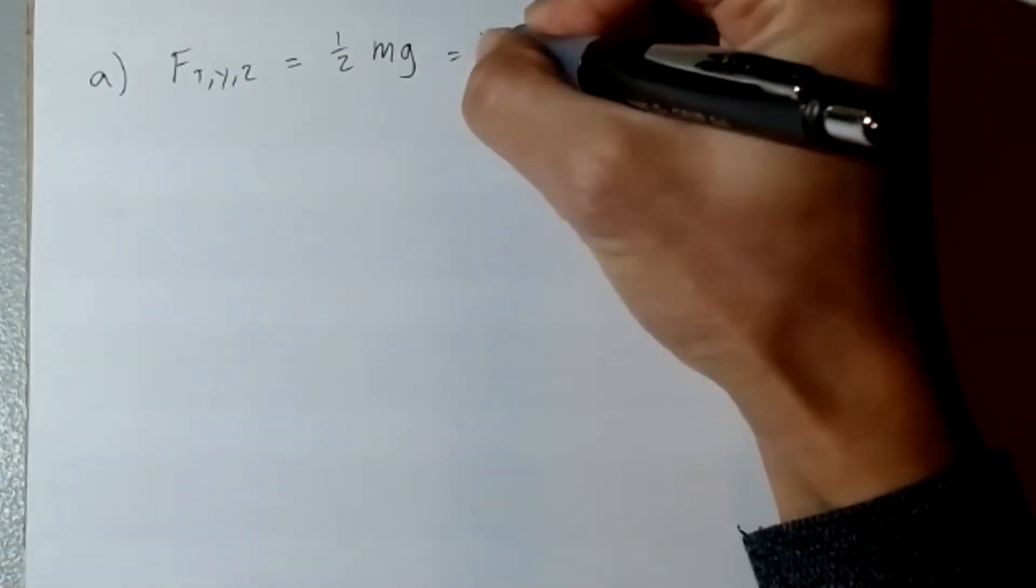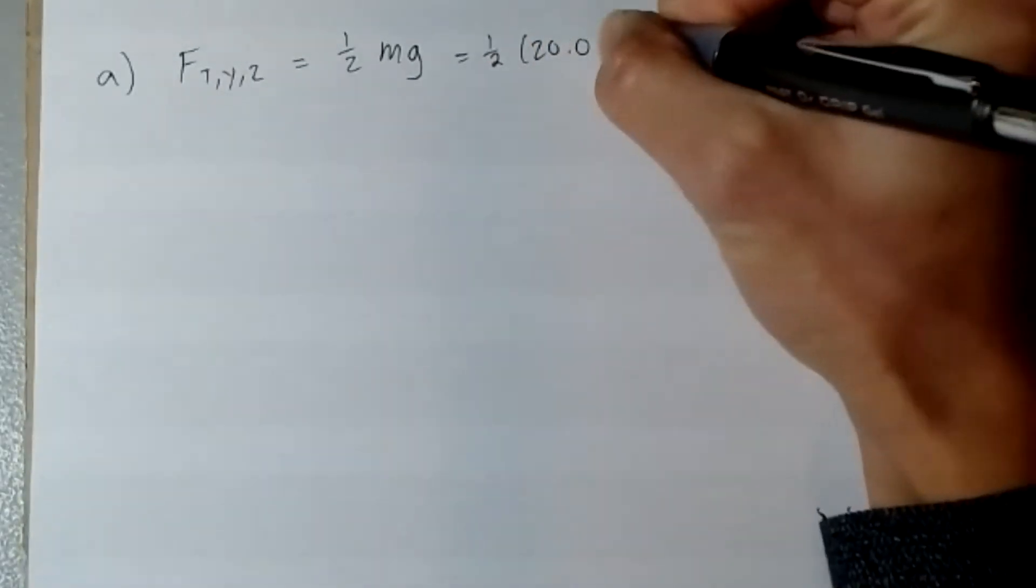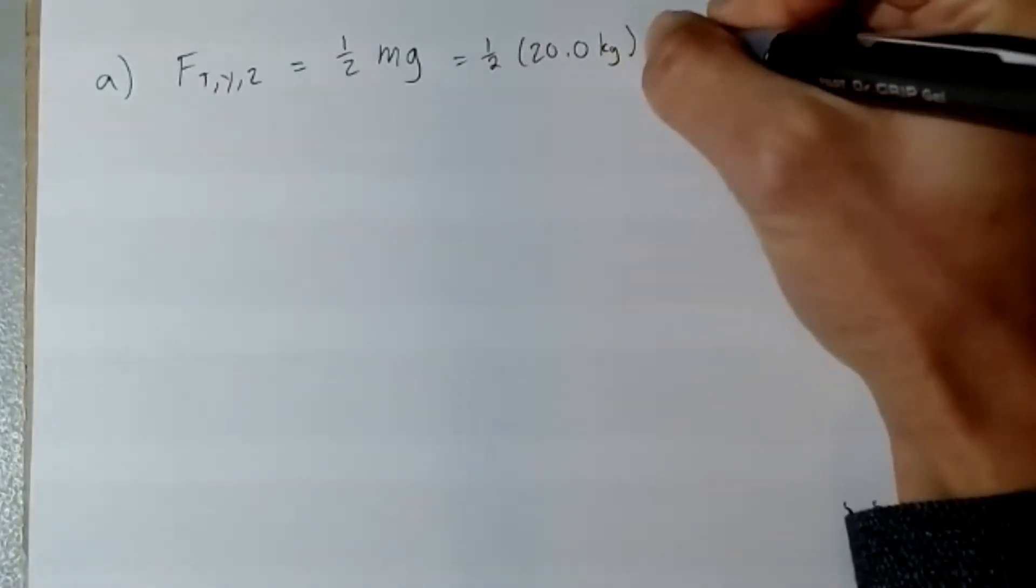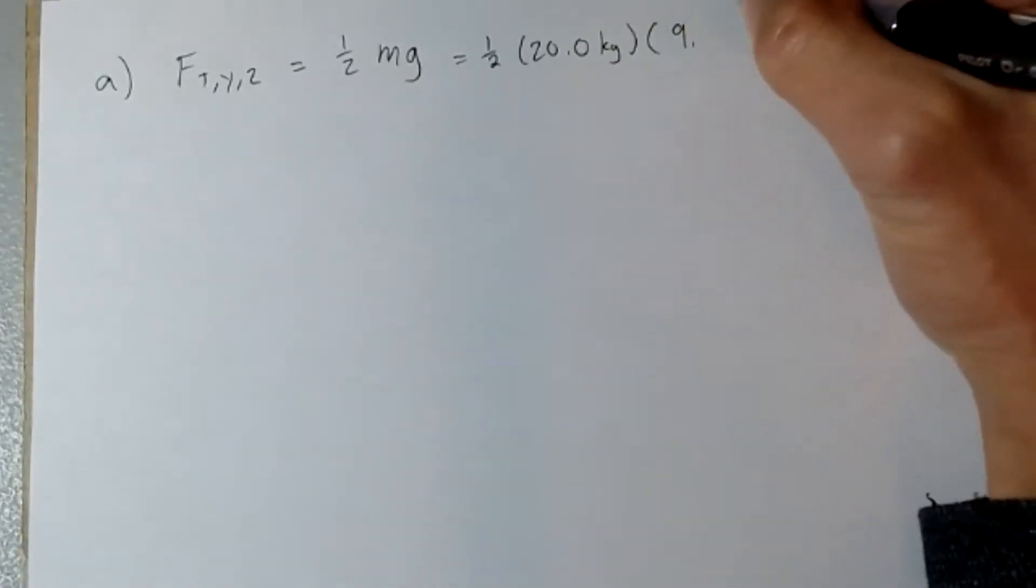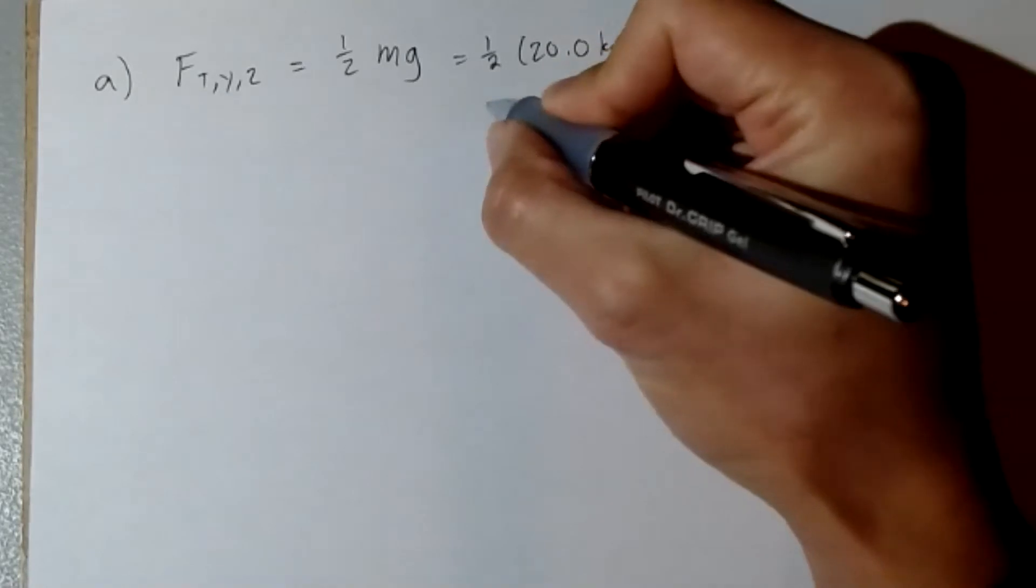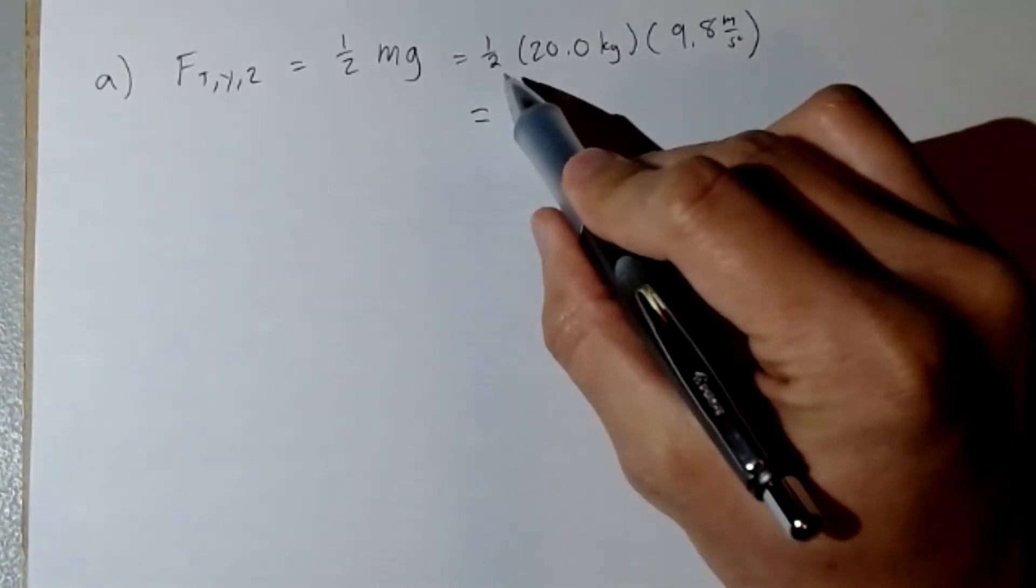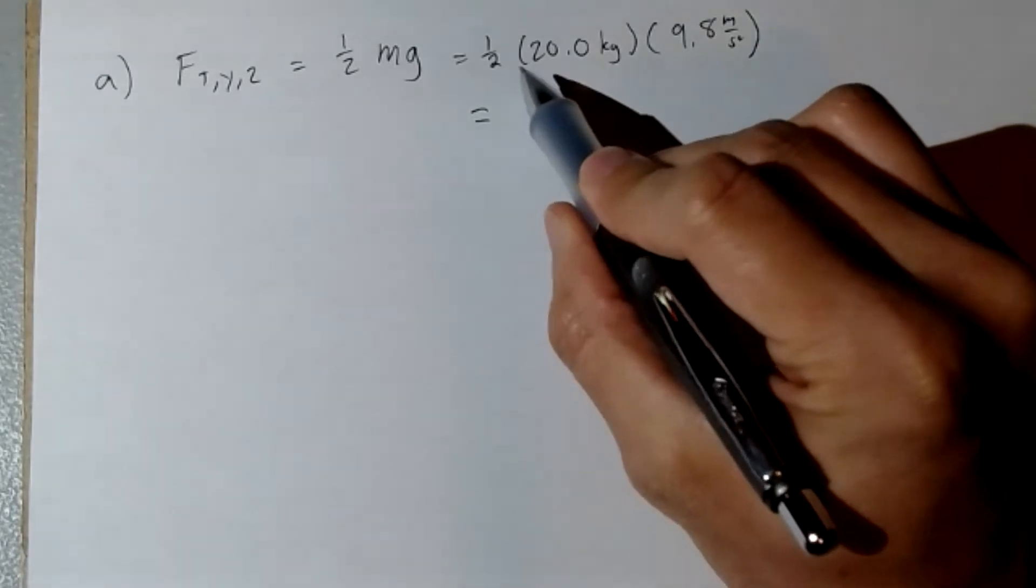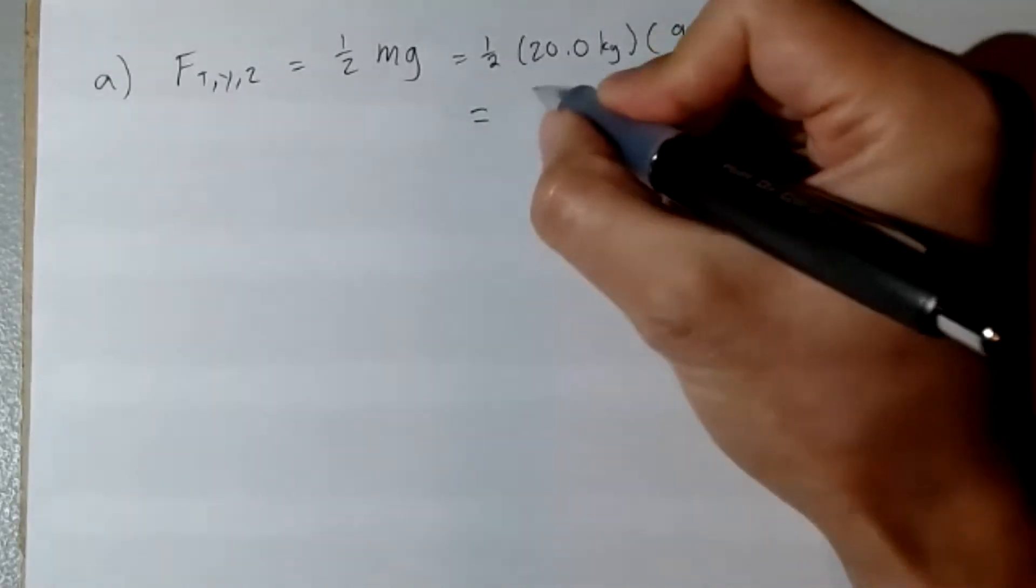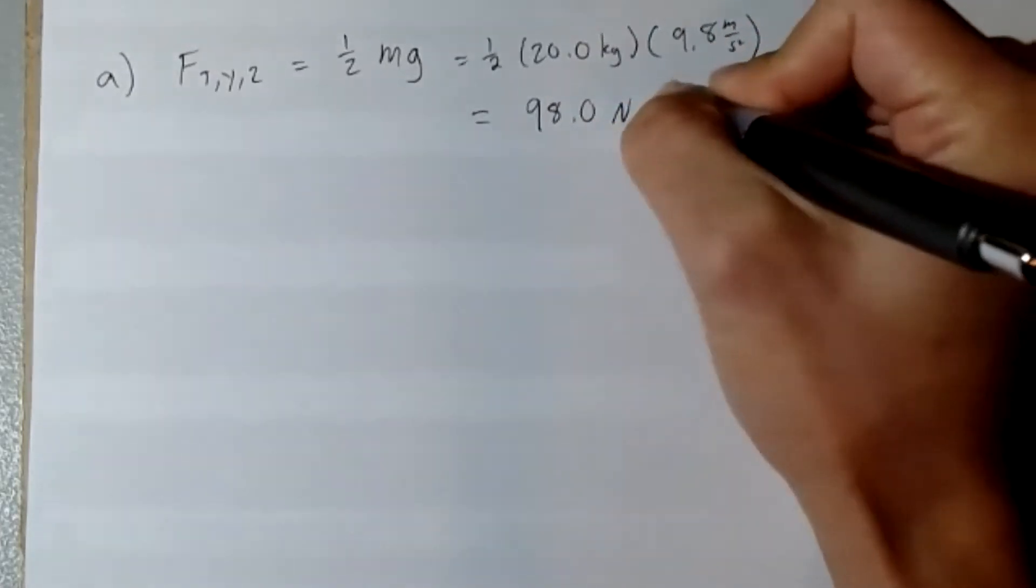Since the weight of the hanging mass is, in this case, 20.0 kilograms multiplied by 9.8 meters per second squared, we can say that the force of only rope two acting in the vertical direction will be one half of that, and that's going to come out to be 98.0 newtons. So that's just the relatively intuitive part of the problem.